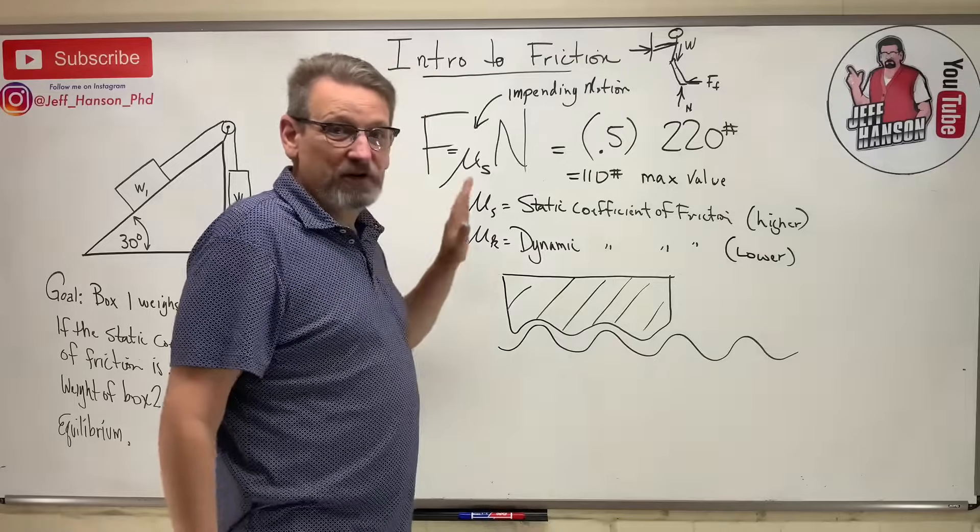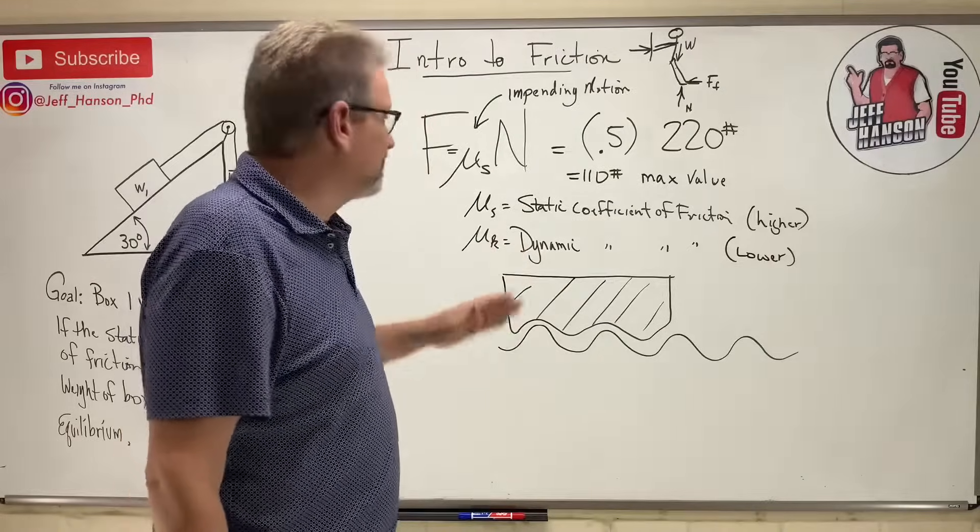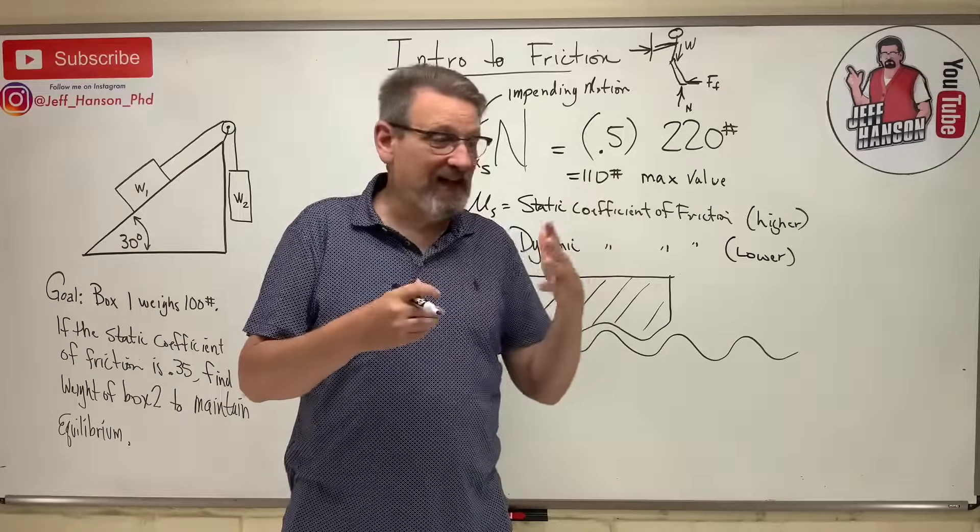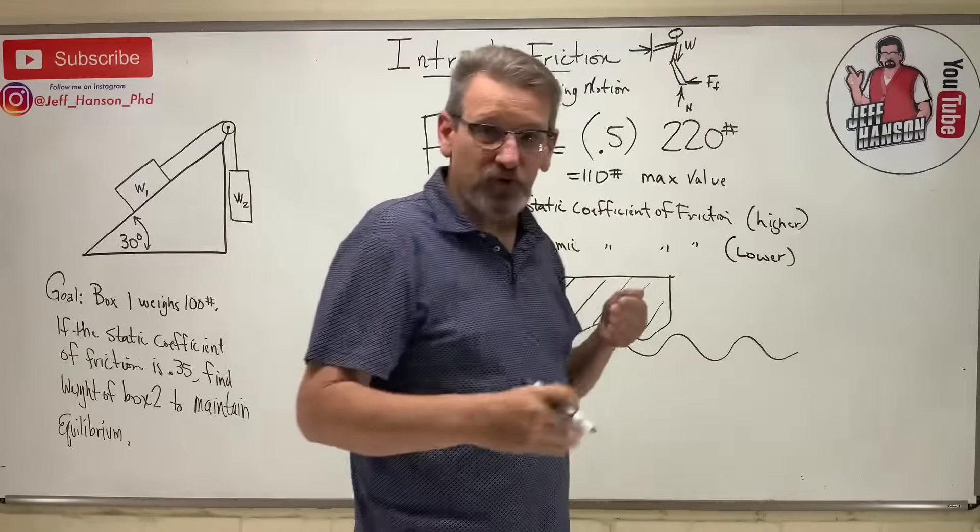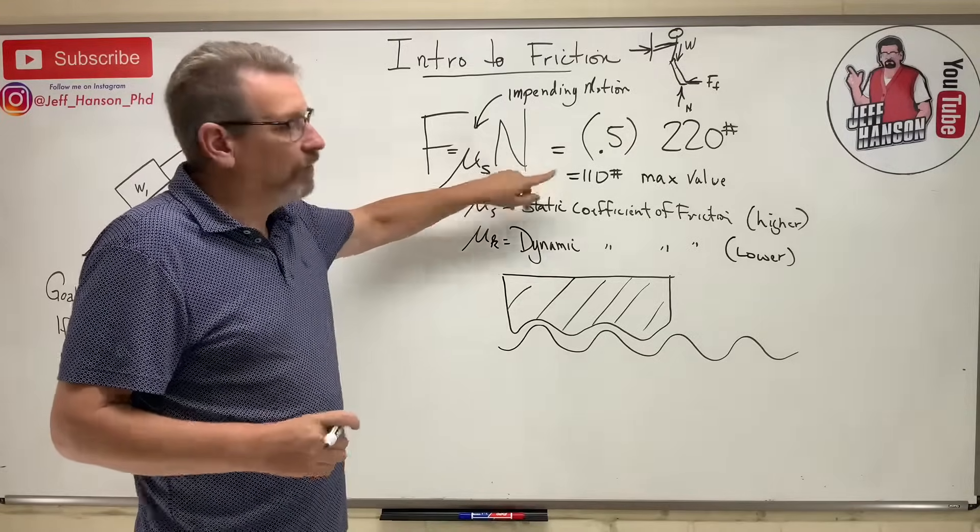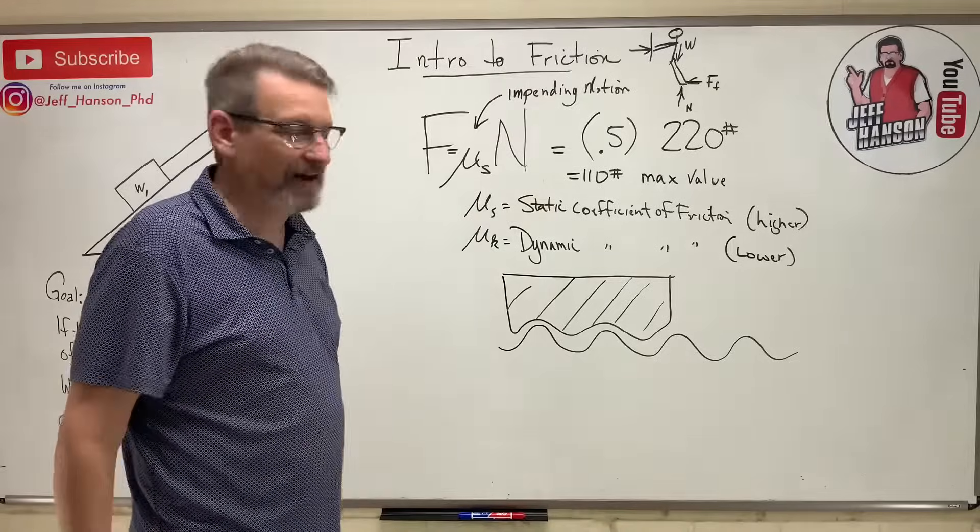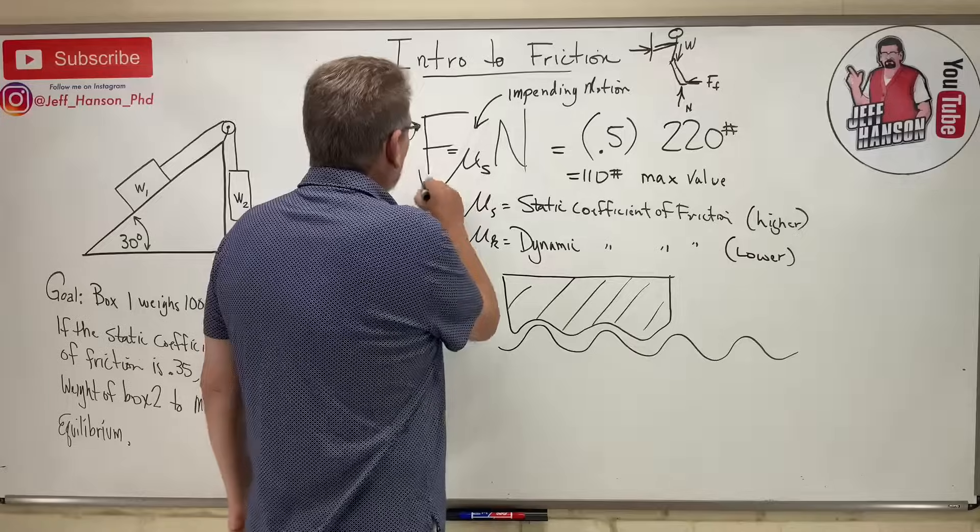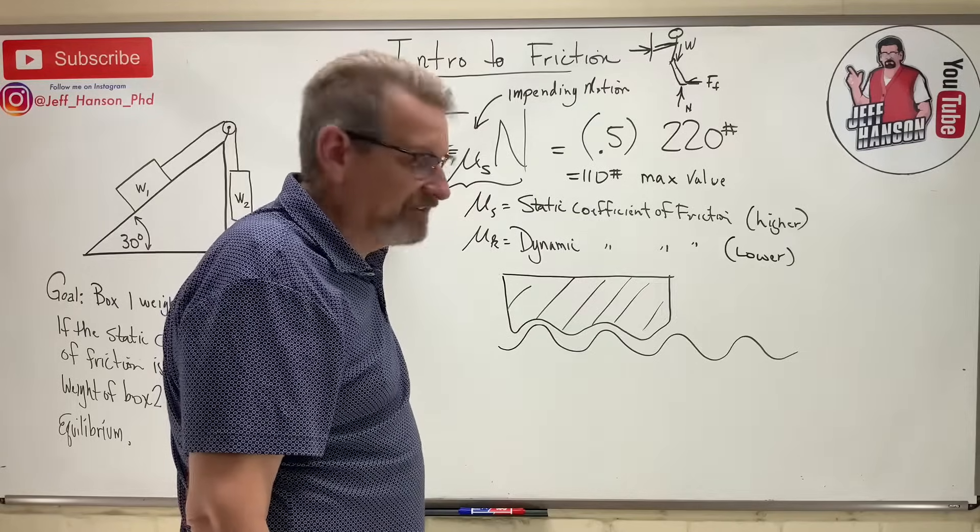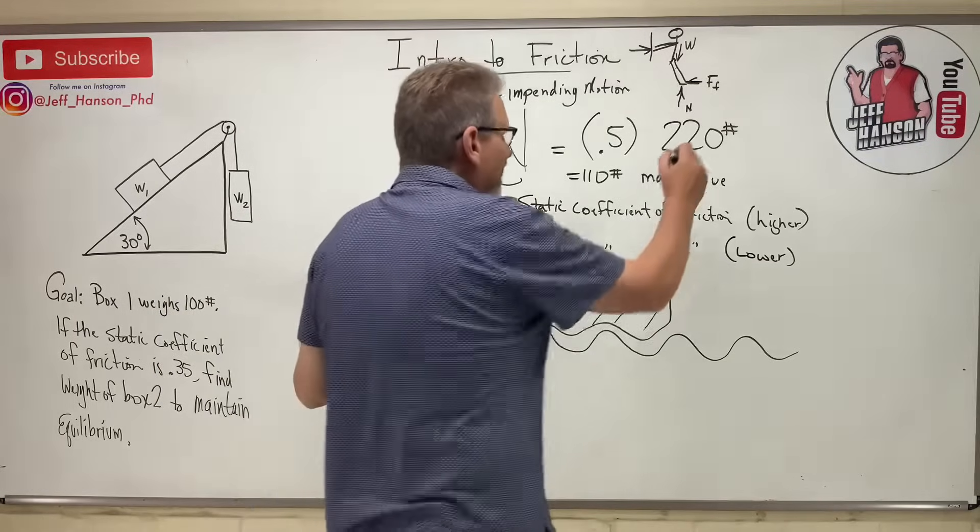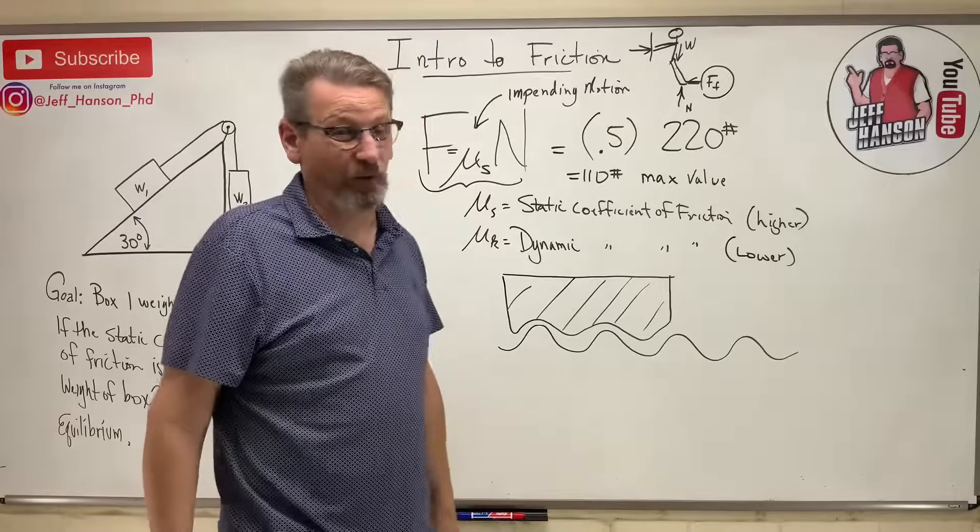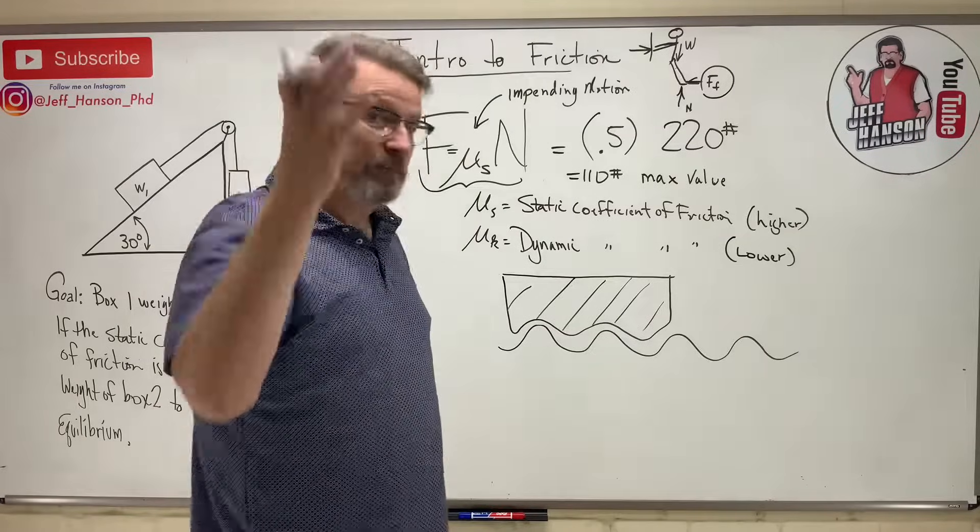So friction is lazy. Friction is going to be somewhere between zero and max unless there is impending motion. So we always have problems that say, find the force to make this thing slide. So I need to find the force it takes to start that motion where there's impending motion. So most of the time we are looking for fun friction or things are moving, things are sliding. That's when you know that you're at that max.